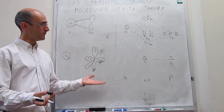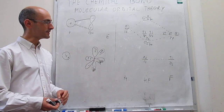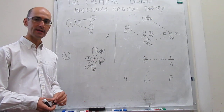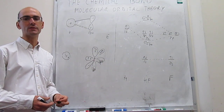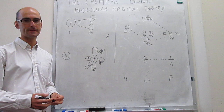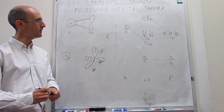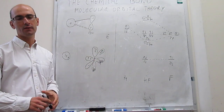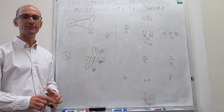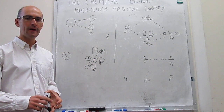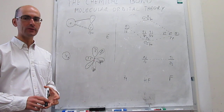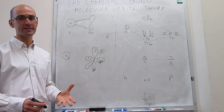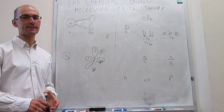The molecule is clearly diamagnetic because there are no unpaired spins. This has been an explanation of the concept of non-bonding orbitals using the HF molecule as an example.